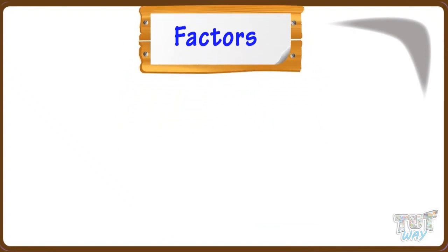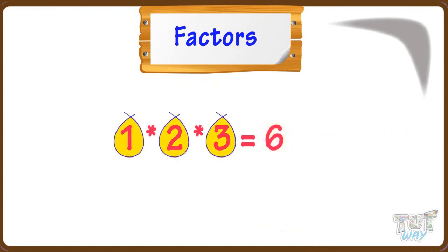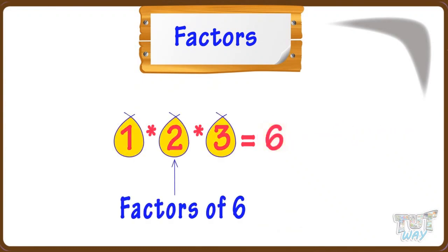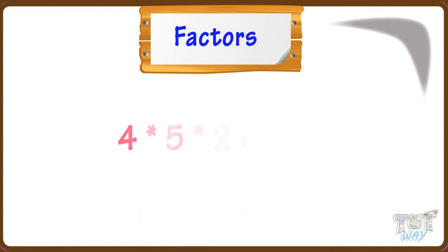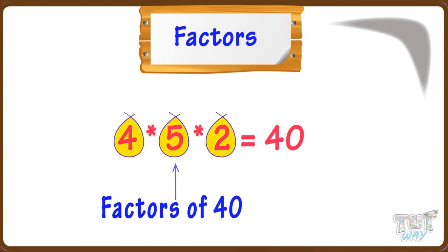When we multiply two or more numbers, we get a product and each number is called a factor of the product. For example, 4 × 5 × 2 = 40. Then 4, 5, and 2 are factors of 40.